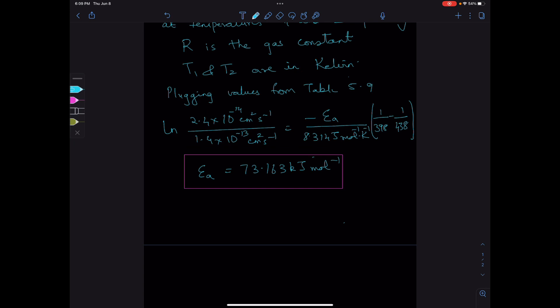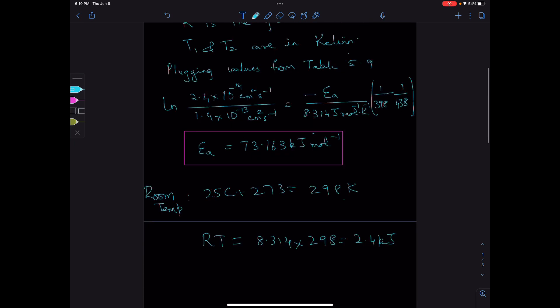To get some perspective, room temperature is 25°C, which is 298 K. RT at room temperature would be 8.314 × 298 = 2.4 kJ/mol, which means about 25 times this energy is needed for diffusion to happen.